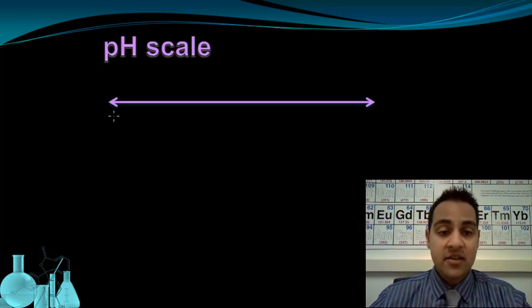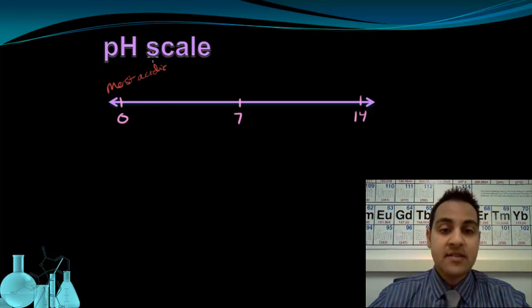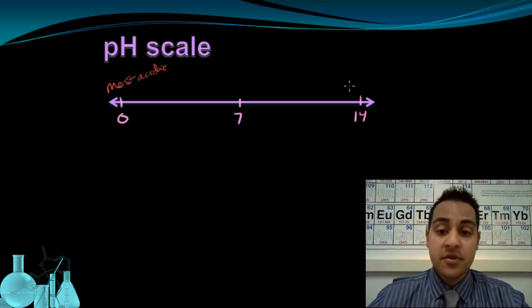So the pH scale is essentially a scale from 0 to 14 with 7 in the middle. 0 is the most acidic, so something with a pH of 0 is going to have the highest acidity, or it's going to be the strongest acid, whereas something with a pH of 14 is going to be the most basic.